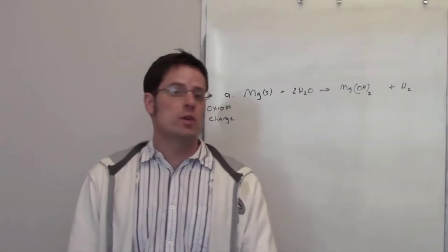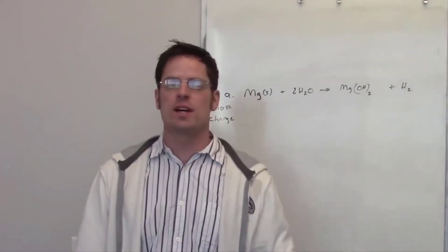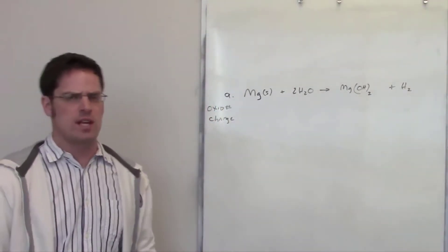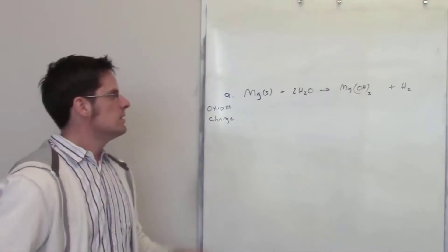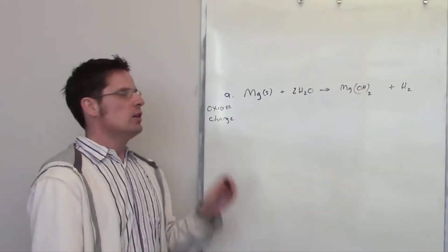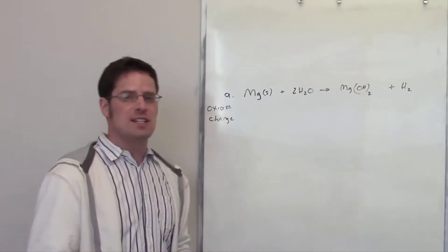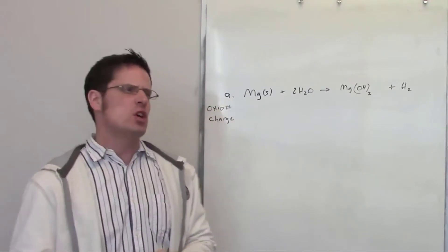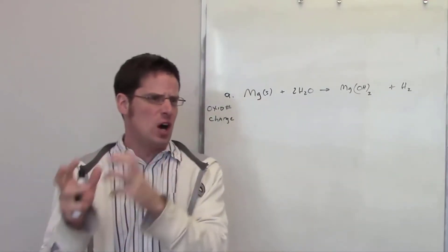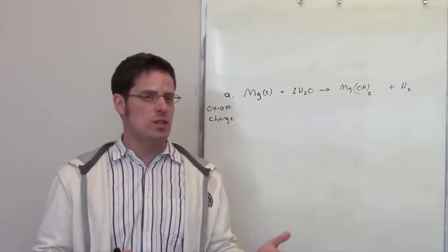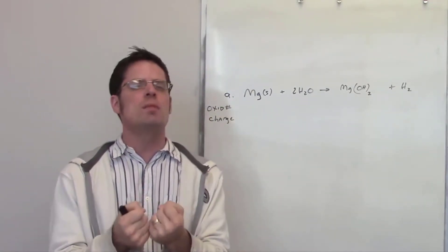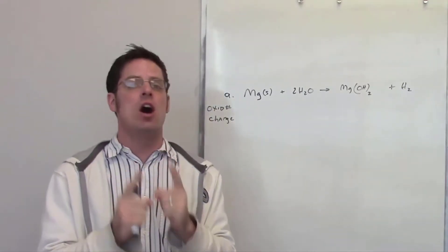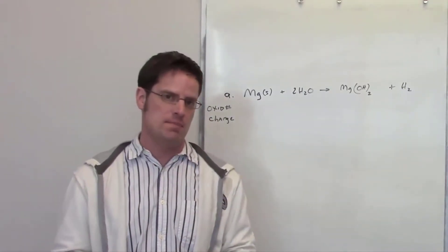This question asks us which element is oxidized and which is reduced in the following set of reactions. I'm going to pick a couple of them. Looking at this first example, in order to determine what is oxidized and what is reduced, we have to start by assigning every single element an oxidation number.